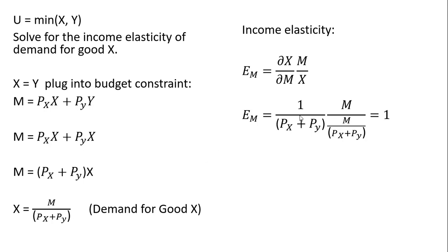So moving down one step then, the partial derivative of the demand function with respect to income is going to just be 1 over the price of good x plus the price of good y. So that's the first thing.